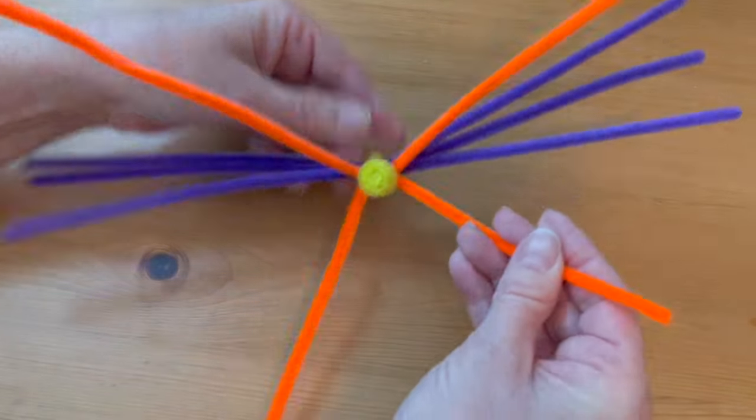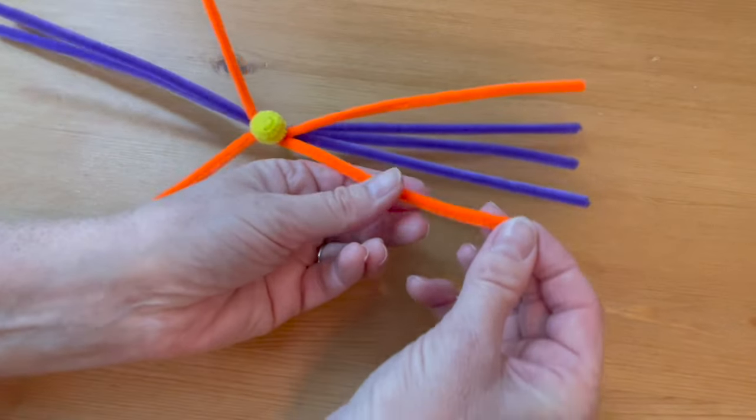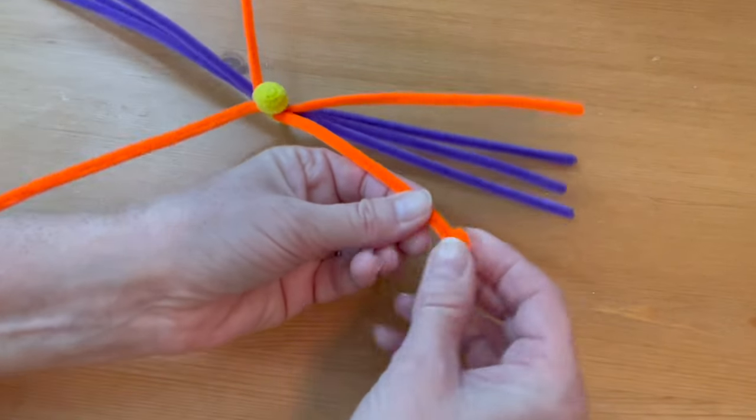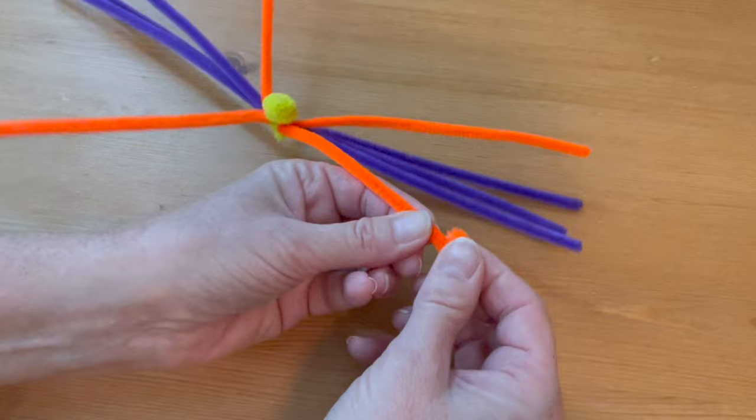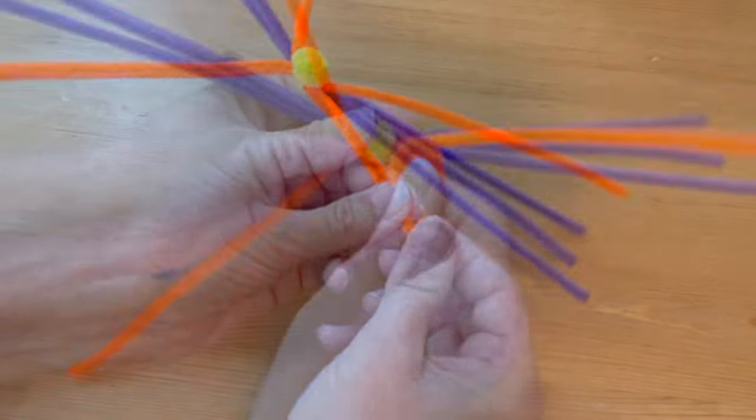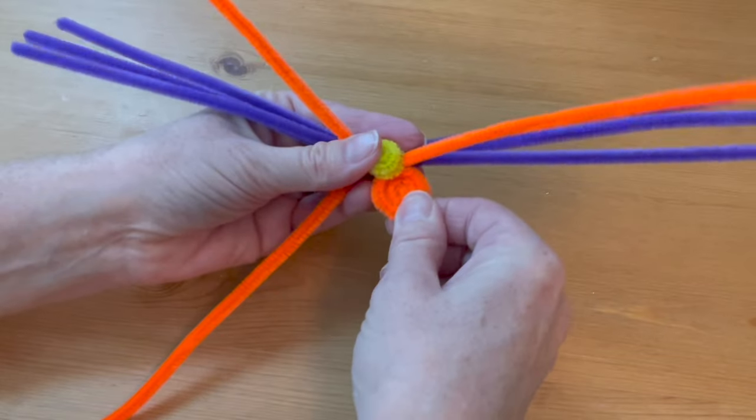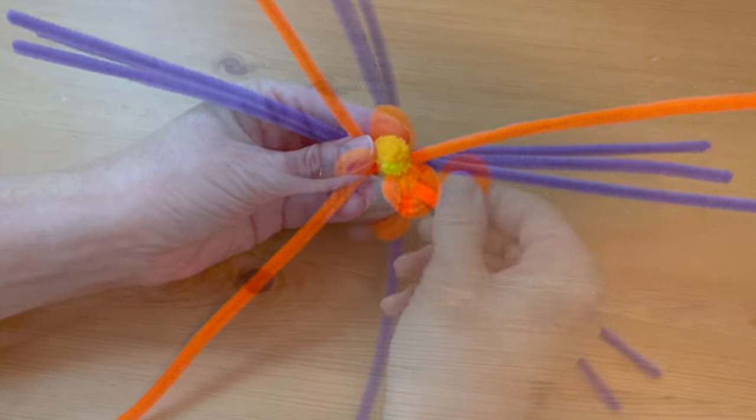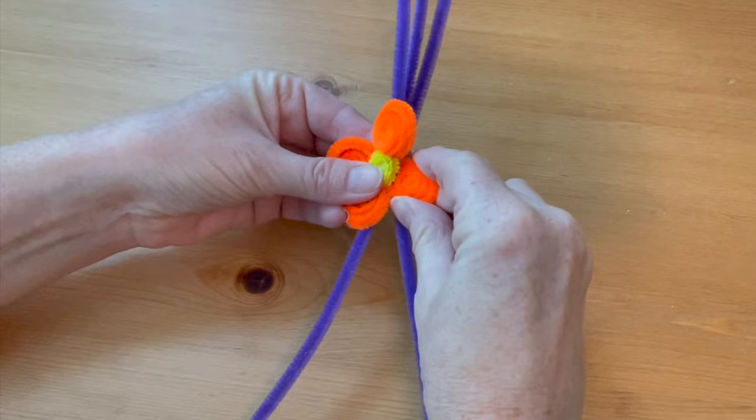Spread them out evenly and then coil each one down just like you did the center, so keep a tight flat coil. Coil it all the way down until you reach the center of the flower and tuck it just underneath the center. Continue with the other three petals.